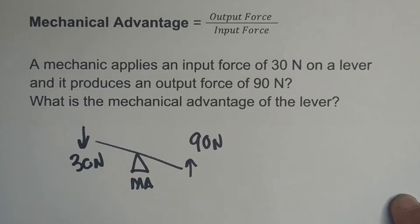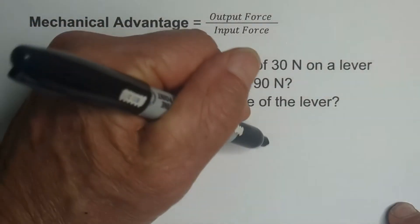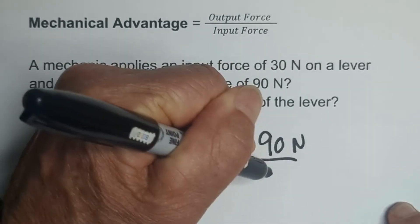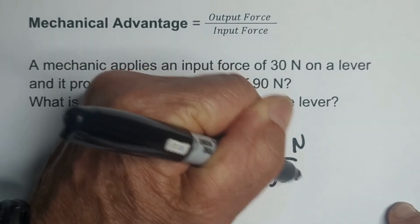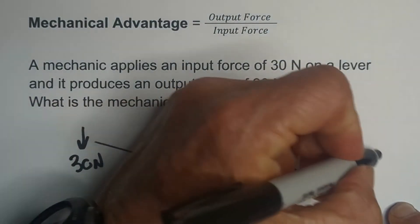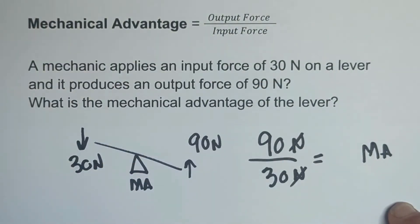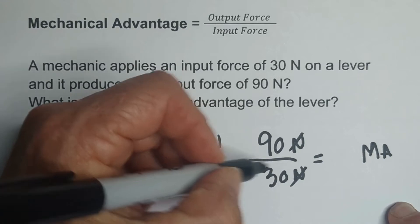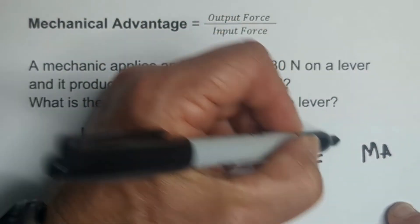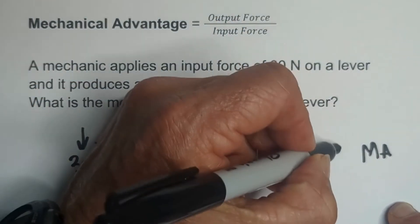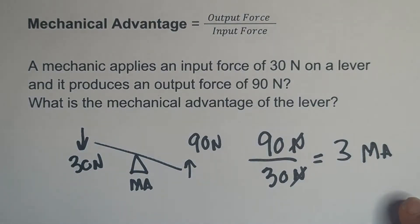So basically all we do is we just take the output force, divide it by the input force, and that gives us the MA, mechanical advantage. Notice that the newtons will cancel. 90 divided by 30 is 3, so the mechanical advantage is 3.